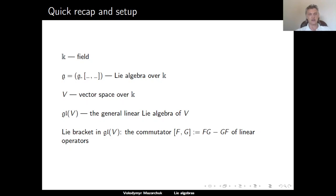It is the same set, but it is equipped with a different binary operation. The new operation is the commutator of the linear maps. The commutator is defined as a difference between the composition of these maps in two different orders.